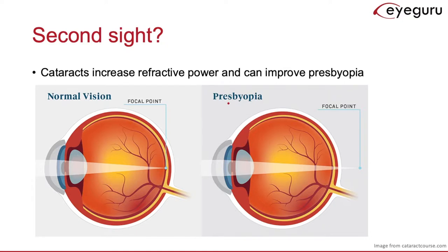Interestingly, while the most common visual complaint of cataracts is worsening visual acuity, some patients who develop nuclear sclerotic cataracts can actually report improvement in their vision, particularly for close objects. This happens because patients who develop cataracts are typically older than 40, and virtually all patients over 40 have some extent of presbyopia, whereby their focal point is behind the retina. As the cataract develops, the refractive power of the lens increases, which serves almost as a set of bifocals to help focus vision closer to the retina. However, this improvement is temporary, as the cataract will continue to progress, become more cloudy, and eventually worsen the patient's vision much more than it initially helped.